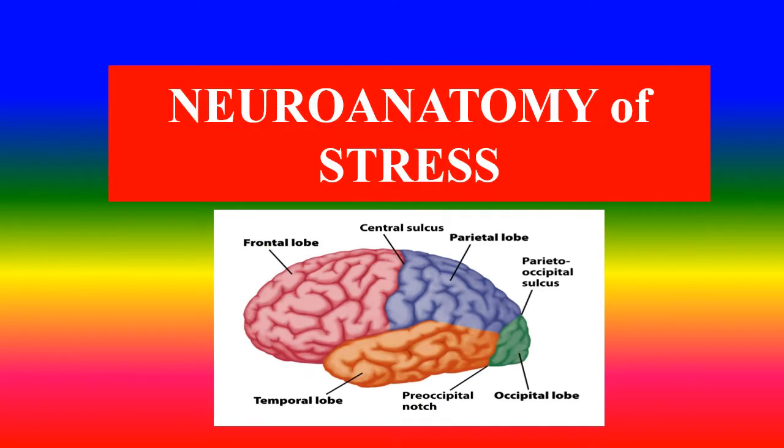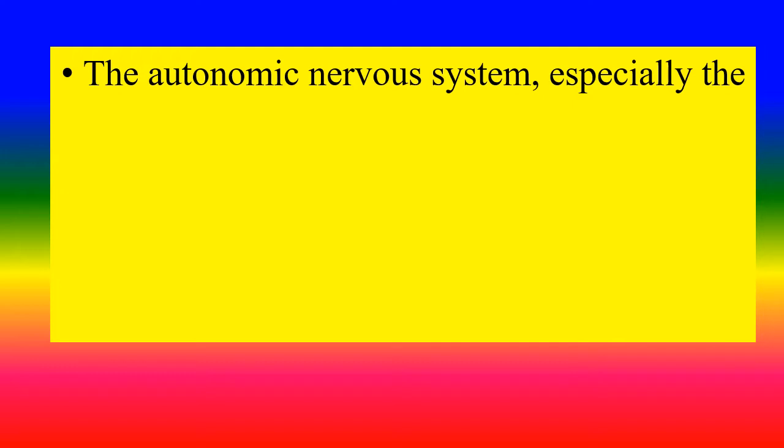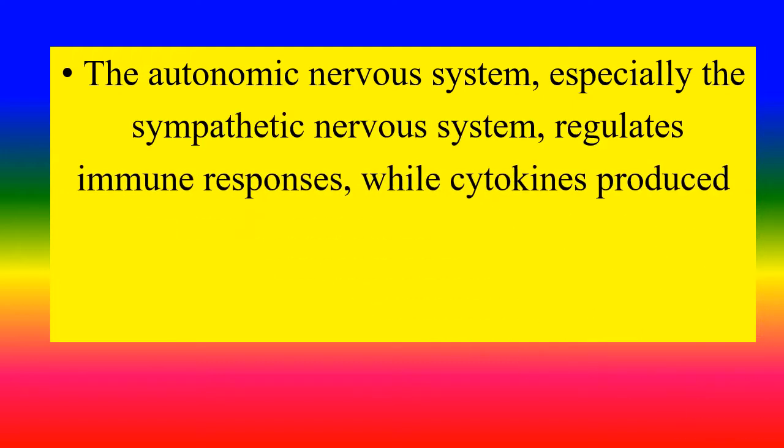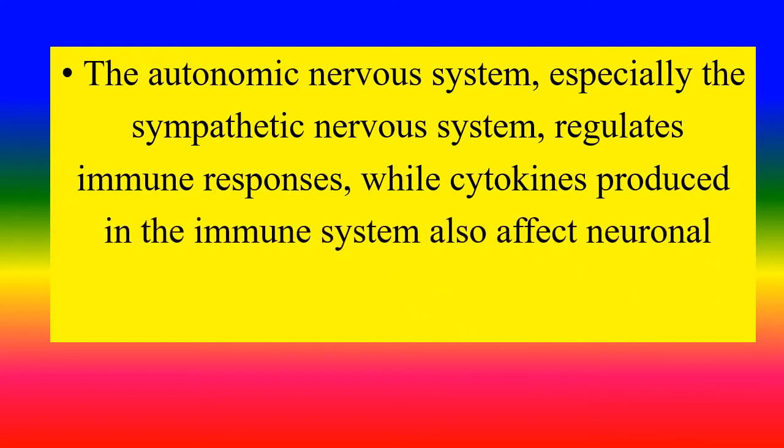Neuroanatomy of stress. The autonomic nervous system, especially the sympathetic nervous system, regulates immune responses, while cytokines produced in the immune system also affect neuronal activities.